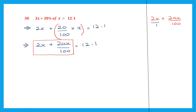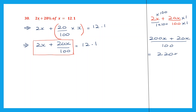Now let's work out this. We'll take this to the working column. So we have 2x plus 20x by 100. Here we're going to write the denominator 1. So denominators are 1 and 100, and the LCM is going to be 100. So 1 into 100 here: 2x into 100 is 200x. And on the other side 100 into 1, so 20x into 1 will be 20x itself. So 200x plus 20x is 220x by 100.